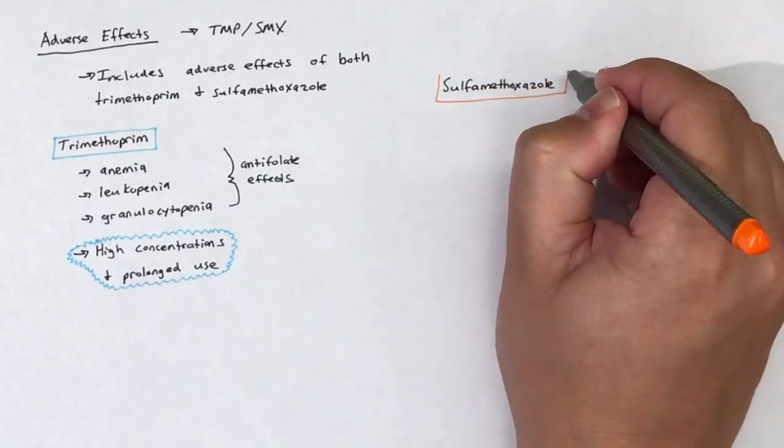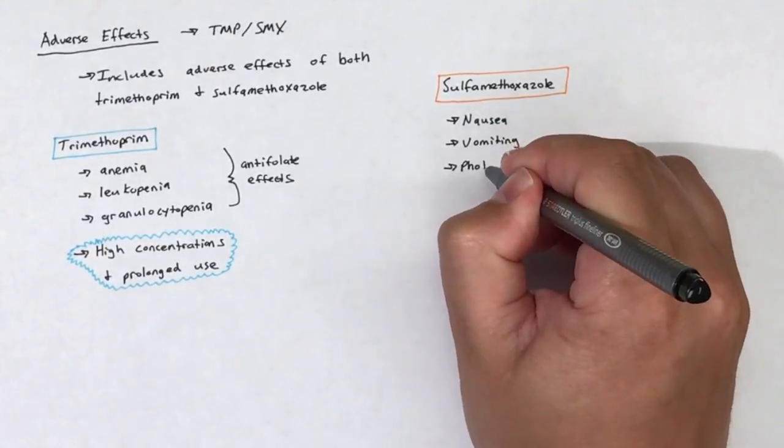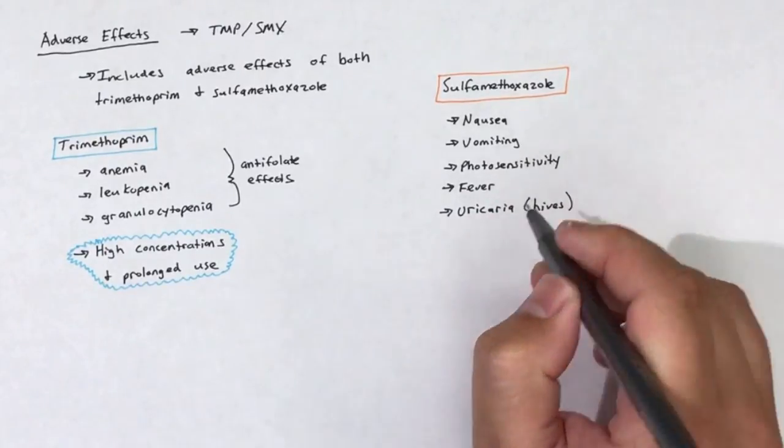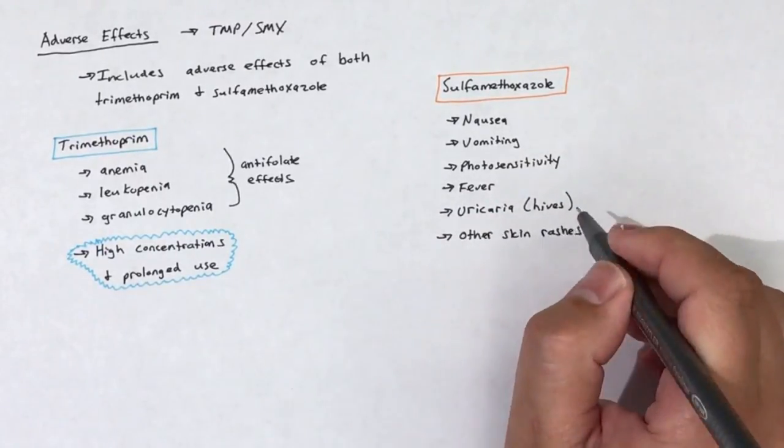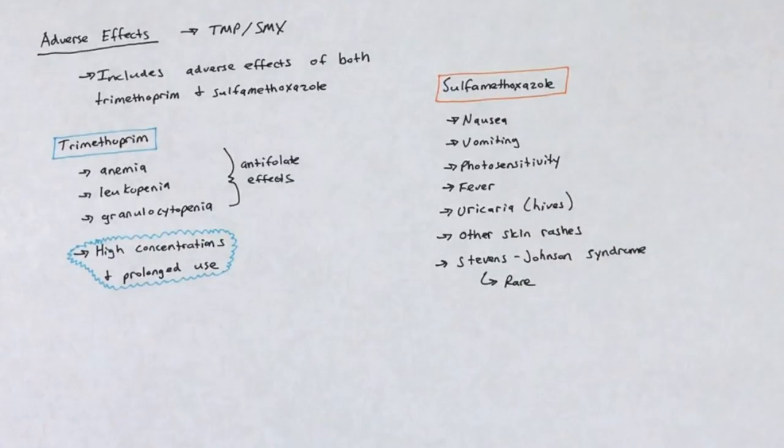On the other hand, sulfamethoxazole can elicit nausea, vomiting, photosensitivity, fever, urticaria or hives, and other types of skin rashes. Rarely, as in less than 1% of the time, a potentially fatal type of mucous membrane and skin eruption called Stevens-Johnson syndrome can occur.